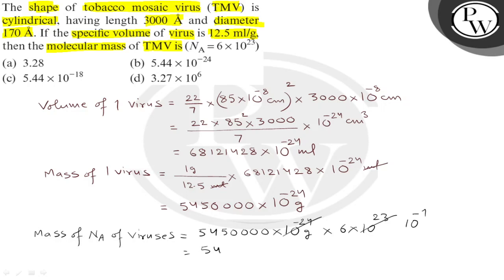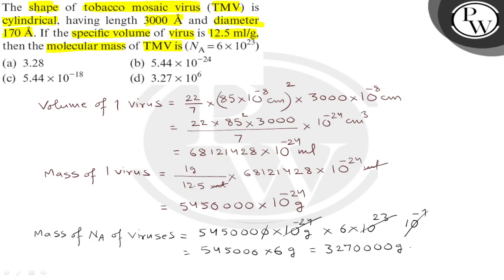So the value is 5.45000 into 10 raise to minus 1 into 6 grams. Multiplying these, we get 3.27000 grams, which in proper notation is 3.27 into 10 raise to 6 grams. This must be the final answer.